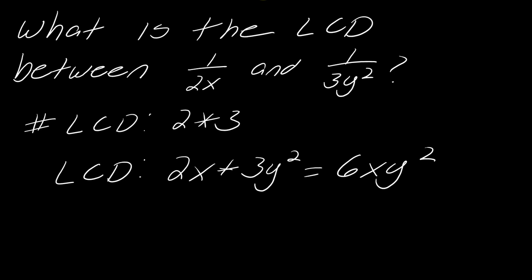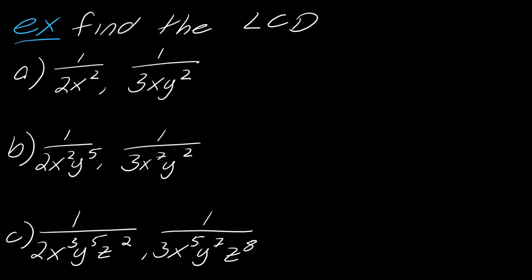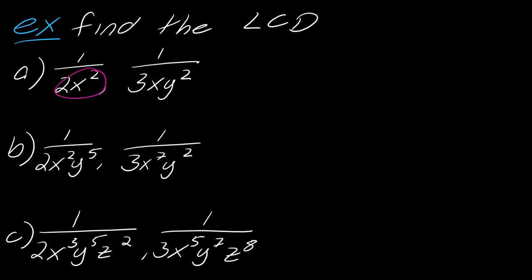Now let's get comfortable with the nuance of having variables in the denominator. I've got three examples here and all of them have the same number parts — they all have a 2 and a 3 — so we can isolate what's going on with the variables. Let's focus on example (a) and look at x squared and xy squared.